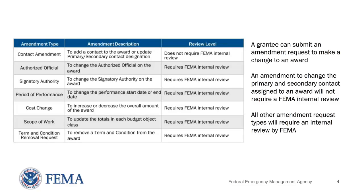We'll begin by explaining the various types of changes that a grantee can request as seen on the table. Please note that an amendment to change the primary and secondary contact assigned to an award will not require a FEMA internal review. However, all other amendment request types will require an internal review by FEMA.